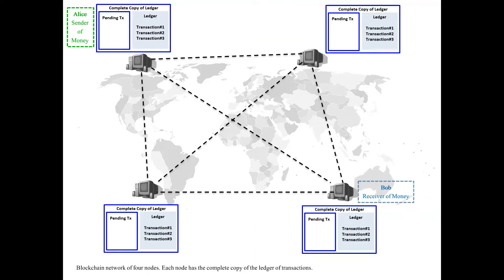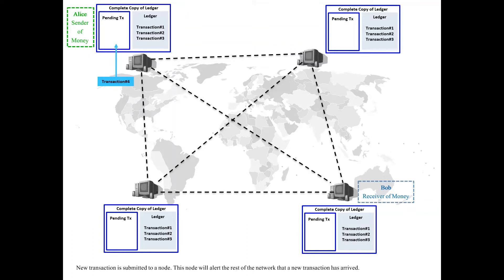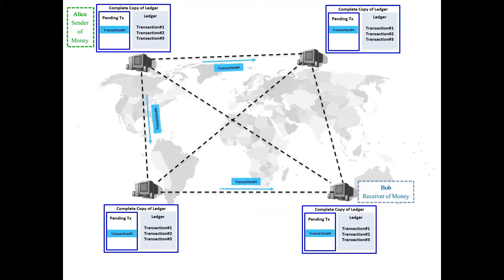For example, we say that Alice wants to transfer some money to Bob. Alice will generate a transaction for that — this is transaction number four. When Alice adds this transaction, it will appear in the pending transaction list, and Alice will broadcast it so that this transaction also goes to all other computers.